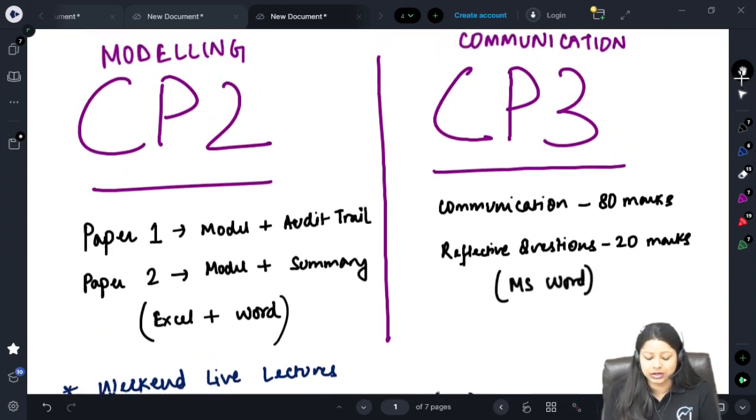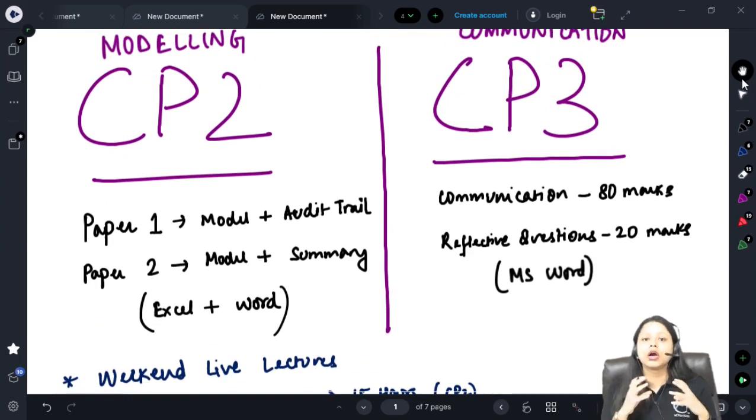Now how many hours is required? CP2, since there are paper 1 and paper 2, there are lots of models which you can practice. So the practice time for CP2 is higher than that of CP3. CP2 ideally needs 80 to 100 hours of preparation and CP3 can be done with 70 hours of preparation.